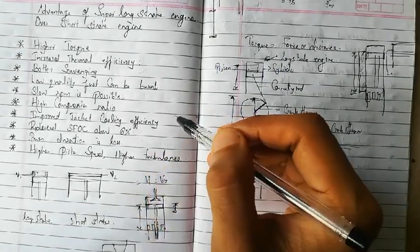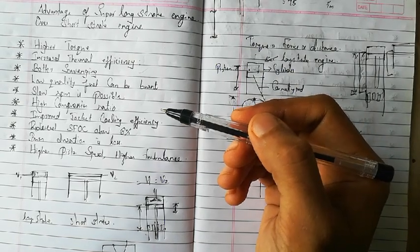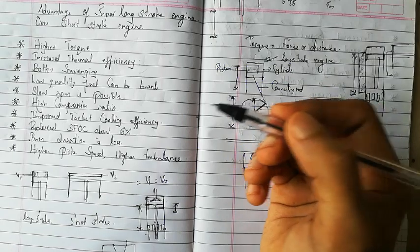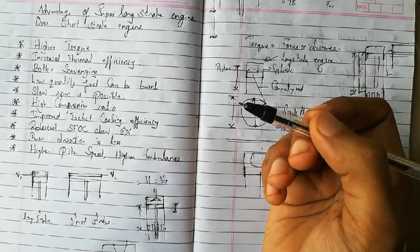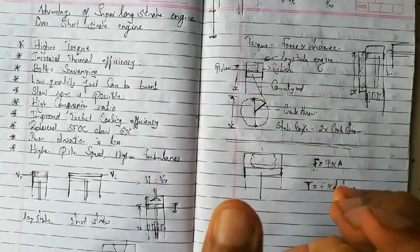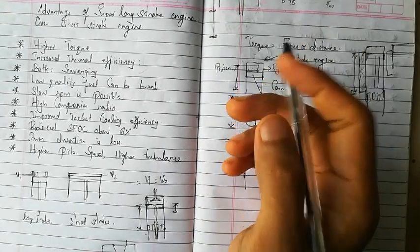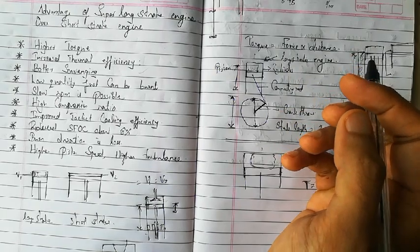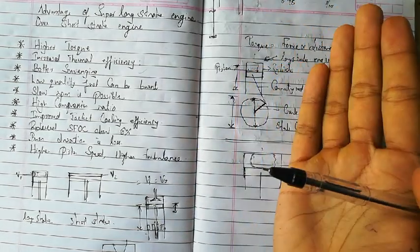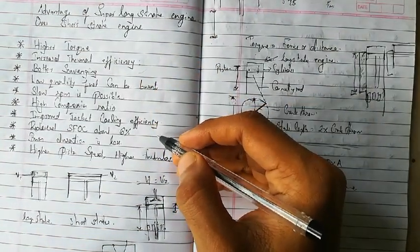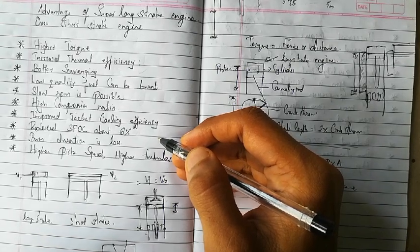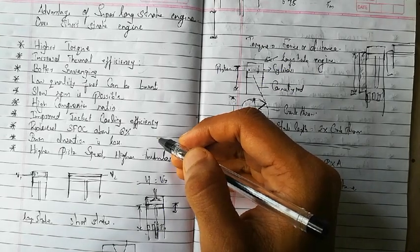Long stroke engines also reduce specific fuel oil consumption by about six percent. Because of the higher compression ratio, the engine produces more power from the same amount of fuel. This means we don't need to use as much fuel to produce the same power output. Alternatively, the higher compression produces a more powerful explosion in the combustion chamber, generating more energy. So the same power can be produced with less fuel.